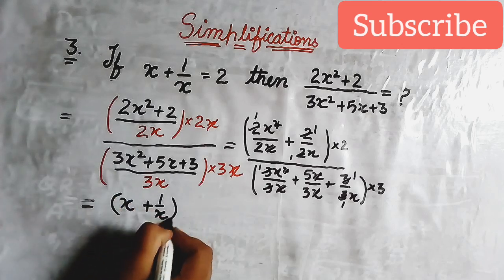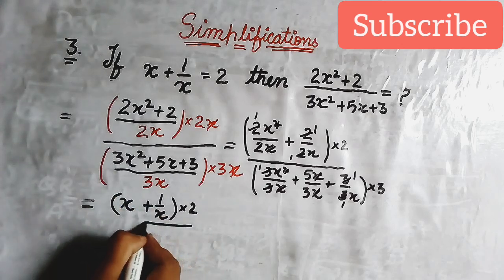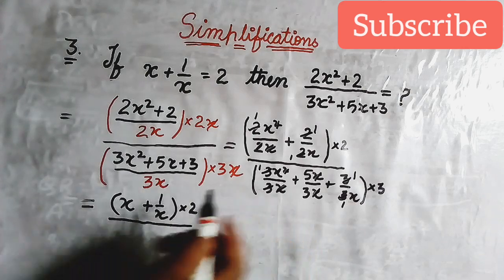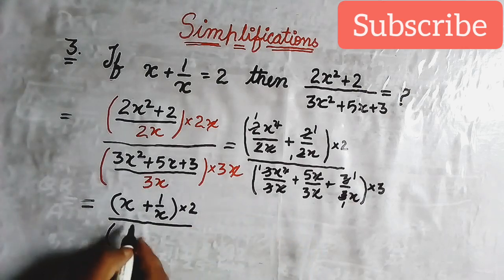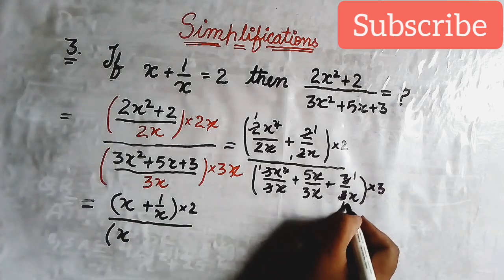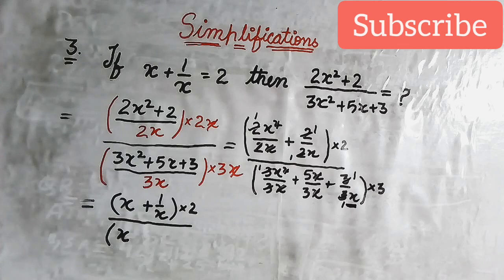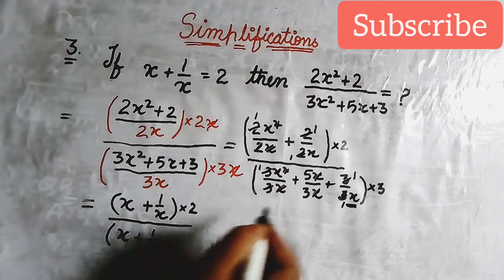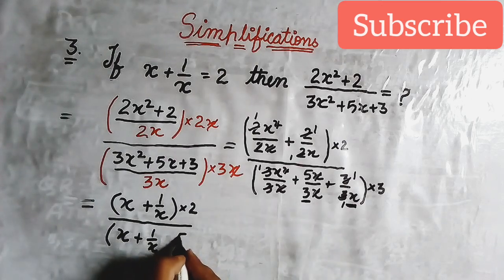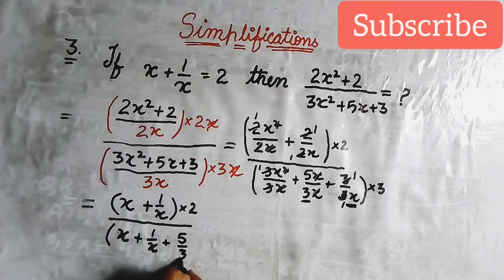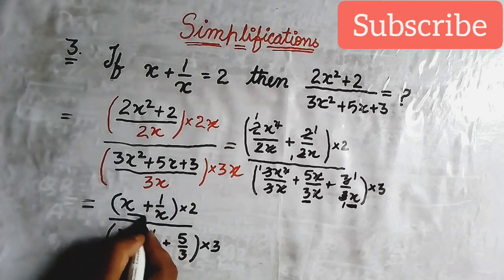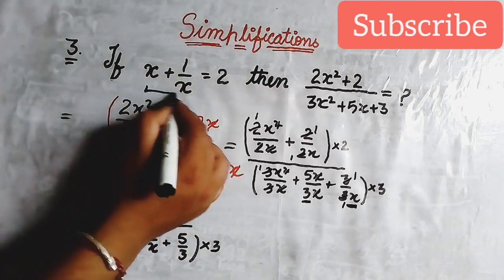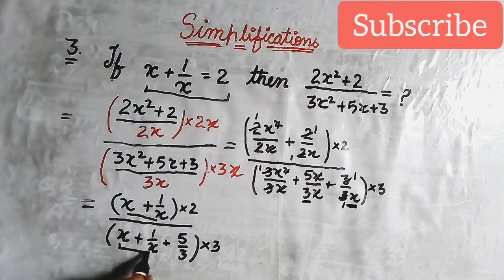The simplified form is: numerator is (x plus 1 upon x) multiplied by 2, and denominator is (x plus 1 upon x) plus 5 upon 3, multiplied by 3. Now replace the value of x plus 1 upon x which is given as 2, substituting in both numerator and denominator.